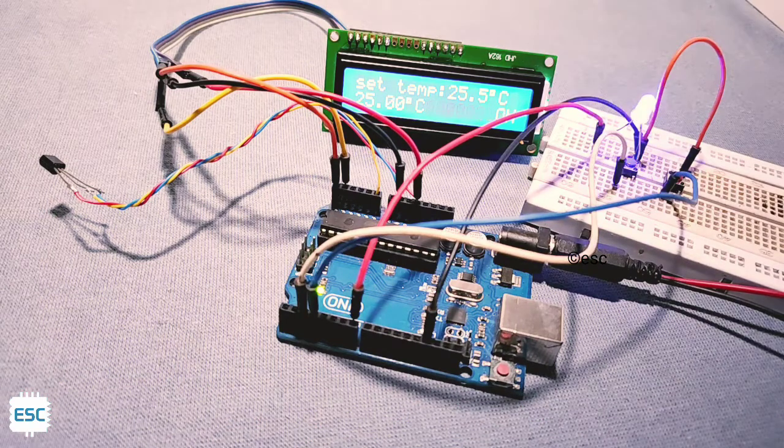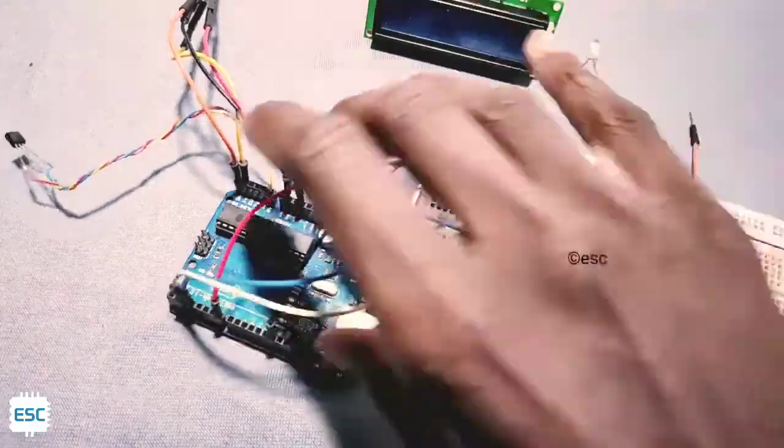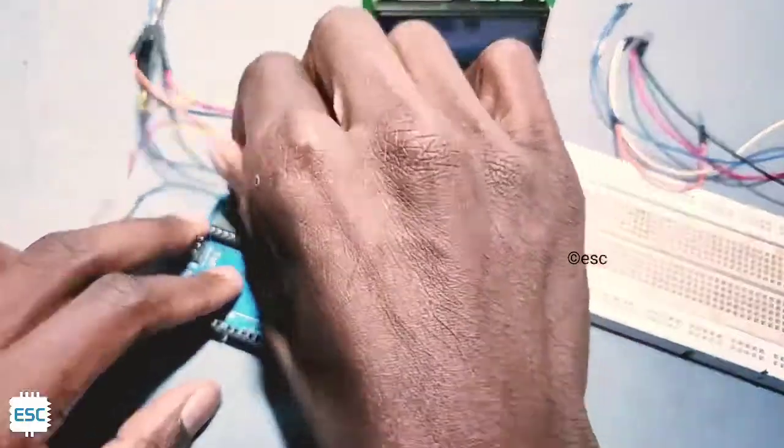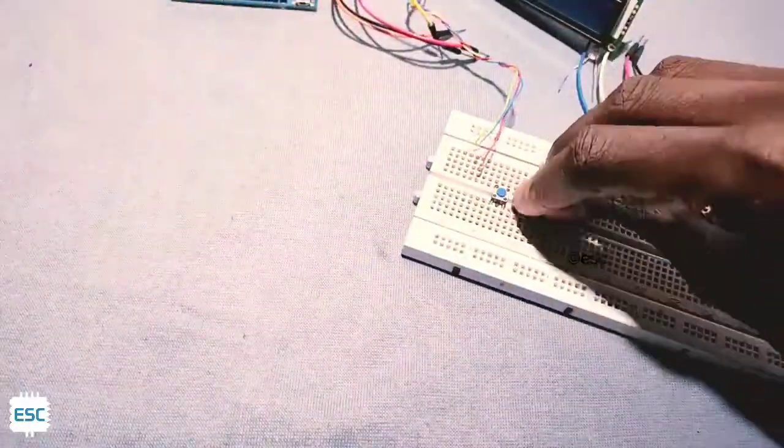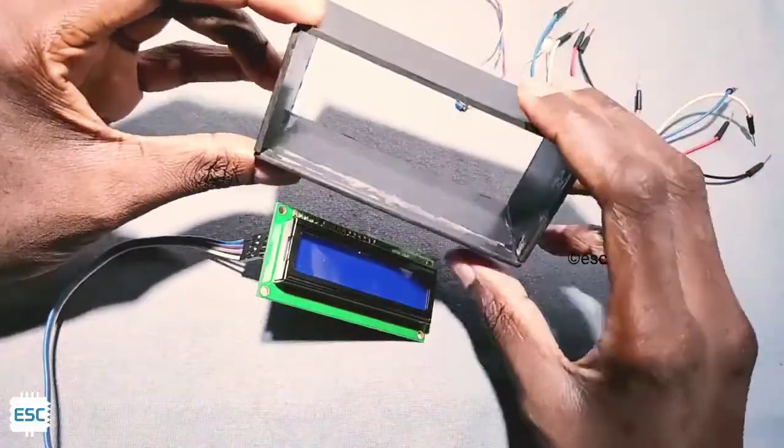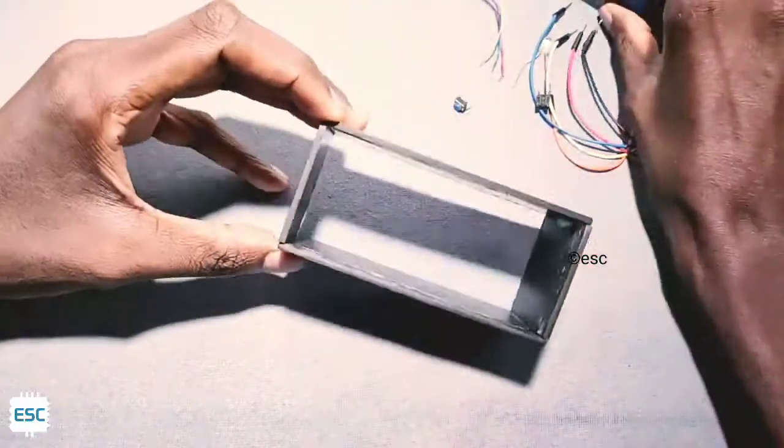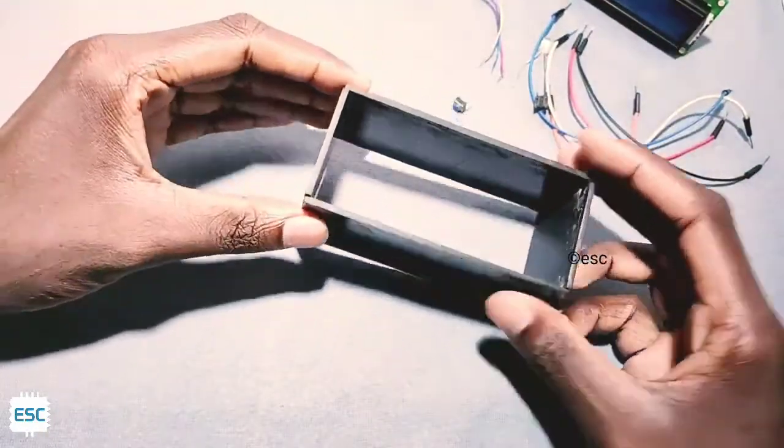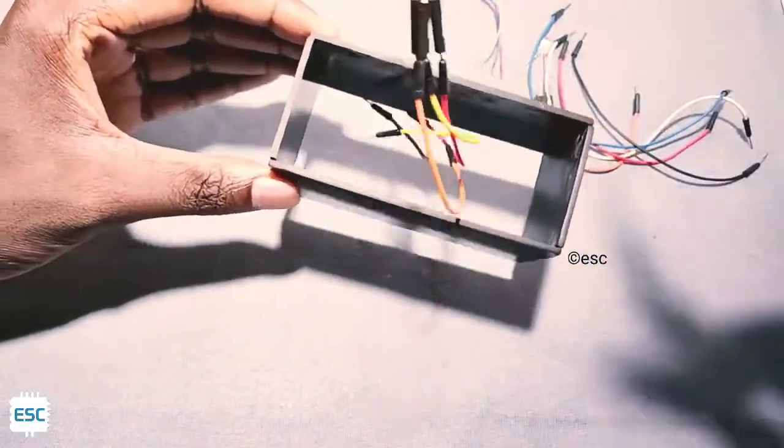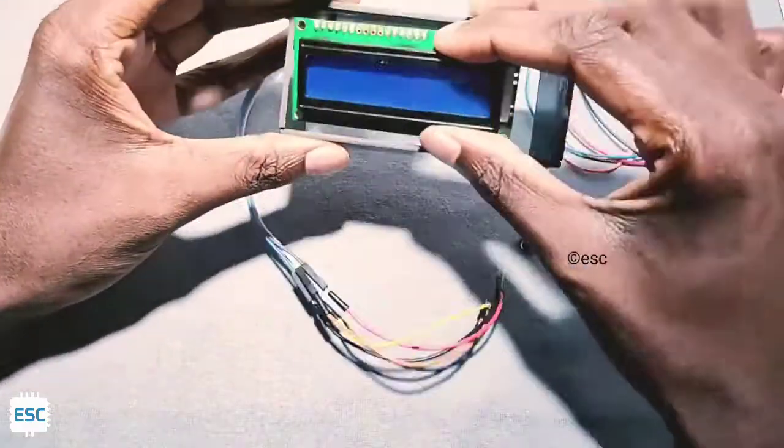We can use this circuit as like this. We need to put everything in an enclosure. For that I removed everything from the breadboard. I made this box for an old project. Now I am using it for this. So this is OK for our project.